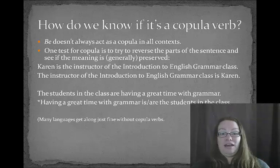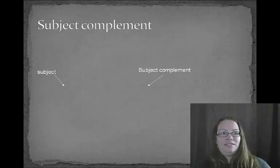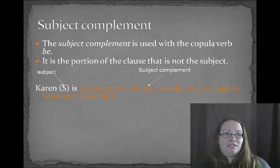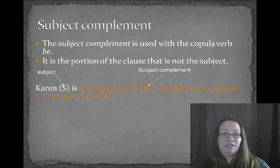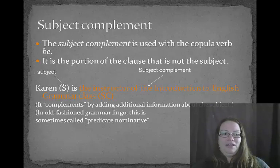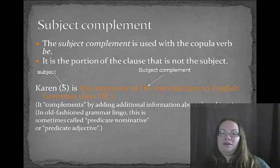Many languages don't have copula verbs at all, and Spanish has more than one copula verb. The subject complement is the portion of the clause that is not the subject. So we have 'Karen' as the subject, the verb 'is,' and then the subject complement — 'the instructor of the Introduction to English Grammar class' — is the rest of the information. The subject complement gives us more information about the subject; it complements by adding additional information. In old-fashioned grammar lingo, this is sometimes called a predicate nominative or a predicate adjective, depending on whether it looks like a noun or an adjective.